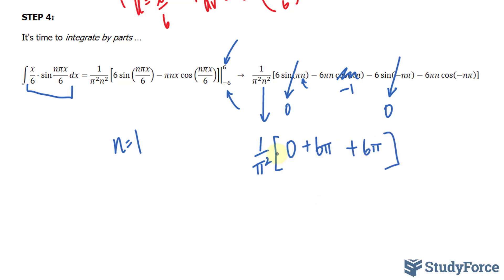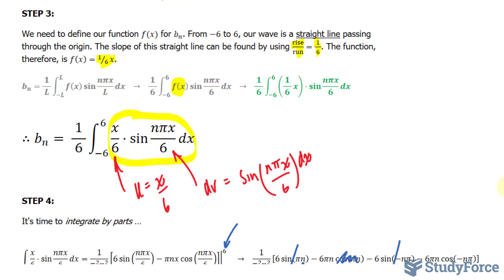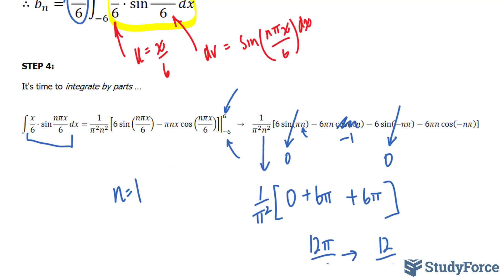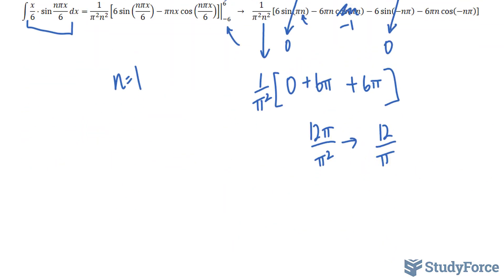And this reduces down to 12 over π. Now, don't forget that b sub n also had a factor of 1 over 6. So if I multiply this by a factor of 1 over 6, I end up with 2 over π. So we just found out what b sub 1 is. It's 2 over π.